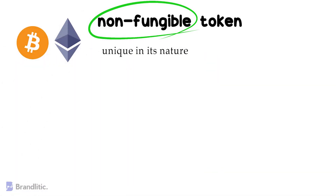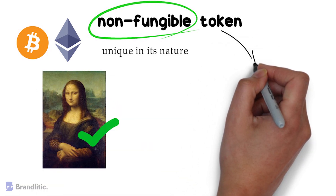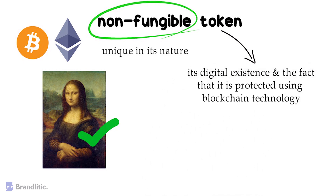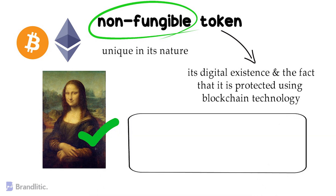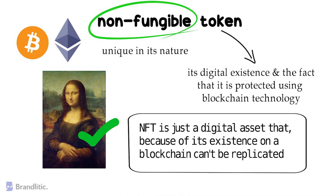A perfect example of a non-fungible item would be the Mona Lisa painting. And by token, we refer to its digital existence and the fact that it is protected using blockchain technology. To break it down even further, an NFT is simply a digital asset that, because of its existence on a blockchain, can't be replicated.